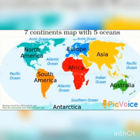What is the smallest continent? In the image, the green color is Australia — this is the smallest continent. So, what do we see here? 5 oceans and 7 continents.